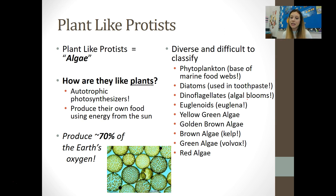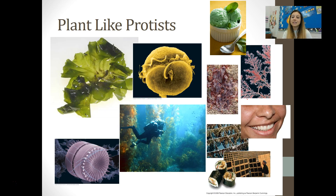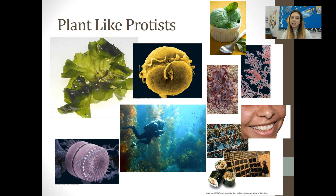Plant-like protists are very diverse and difficult to classify. Some you've probably heard of: phytoplankton, algae, and euglena — which you are expected to know. Diatoms are actually used as the abrasive structure in toothpaste. There's a thickener in ice cream made using protists, and seaweed in sushi is also a type of protist. So they're very diverse and found in many everyday products.